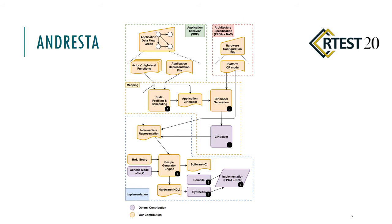Here is the proposed design flow: UNRESSA. It's a fully automated design flow that takes the application behavior alongside the architecture specification. By providing these inputs to the mapping step — which is the main contribution of this paper — it tries to solve the design space exploration problem by translating it to a constraint programming model. At the end, by generating an intermediate representation as input to the receipt generator engine, it generates software and hardware projects to implement your application into your target hardware platform. UNRESSA is an open source project available on GitHub.